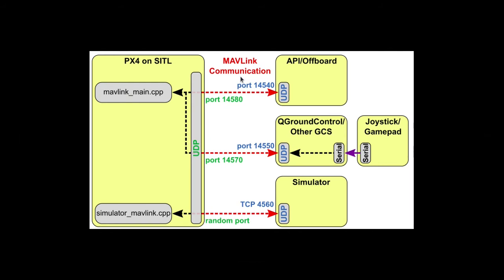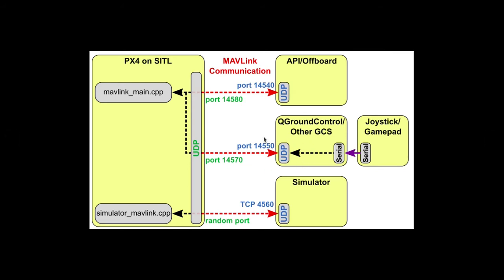PX4 will connect with the Gazebo simulator through MAVLink protocol and through TCP with a random port. It will also connect with QGroundControl, our ground control software, through UDP. It will also connect to ROS through UDP.